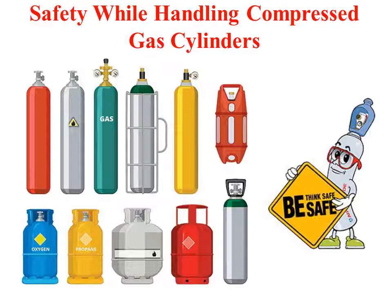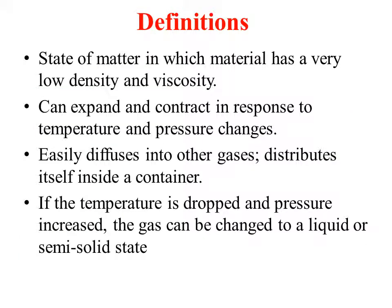How do you define a gas? Gas is defined as a state of matter in which the material has a very low density and viscosity. It can expand and contract in response to changes in temperature as well as pressure. It can easily diffuse into other gases — meaning it can mix very easily with other gases. It can distribute itself inside a container, filling each nook and corner. If temperature is dropped and pressure is increased, the gas can be changed to a liquid or semi-solid state.